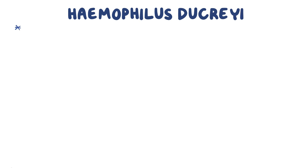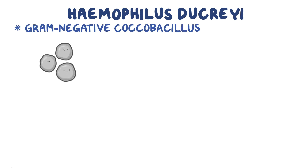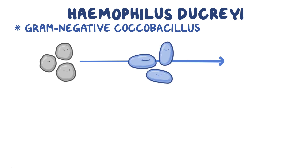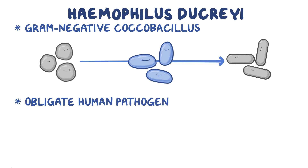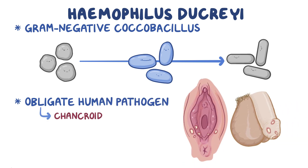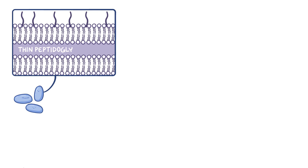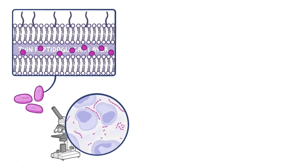Haemophilus ducreyi is a gram-negative coccobacillus, which means that shape-wise it's somewhere between a spherical coccus and a rod-like bacillus. It has a thin peptidoglycan layer, so it doesn't retain the crystal violet dye used during gram staining. Instead, like any other gram-negative bacteria, it stains pink with safranin dye, so under the microscope the bacteria look like short or relatively long pink rods with rounded ends.